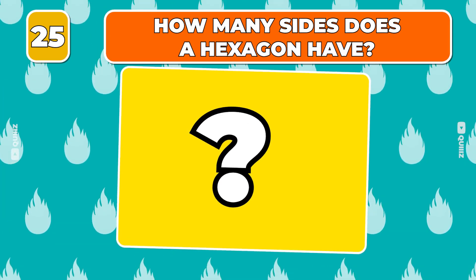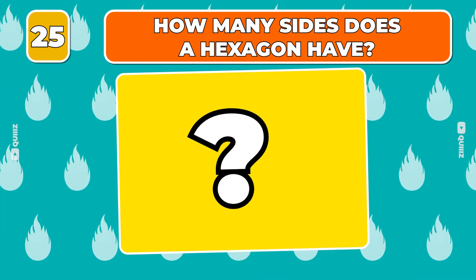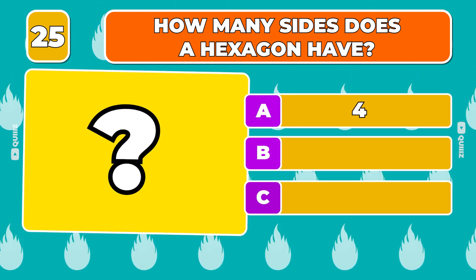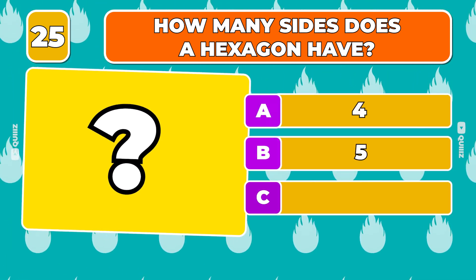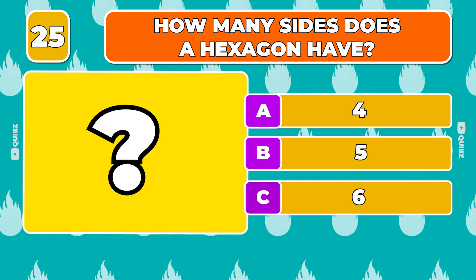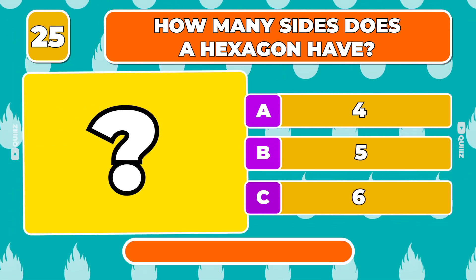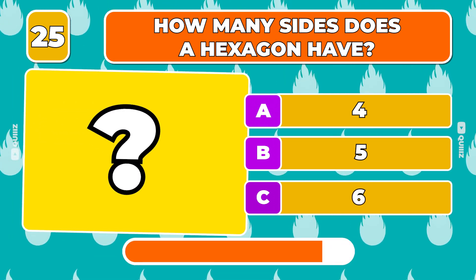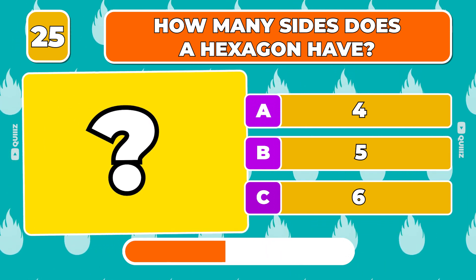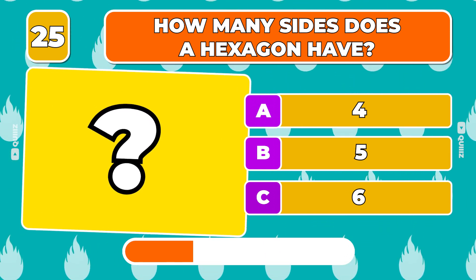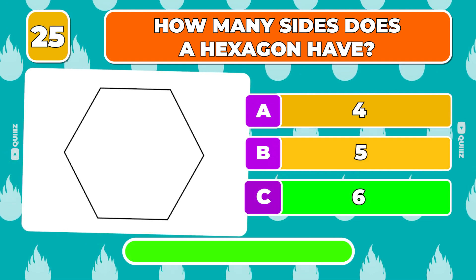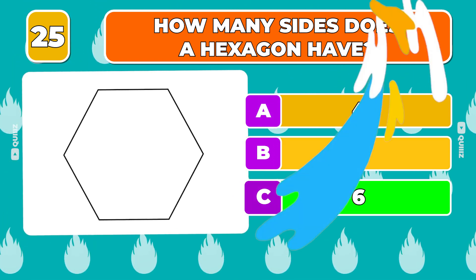Question 25. How many sides does a hexagon have? Four, Five, Six. Yeah, a hexagon has six sides. Pick your next challenge, and make sure to like and subscribe.